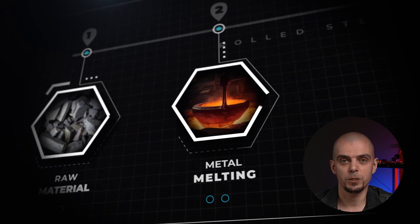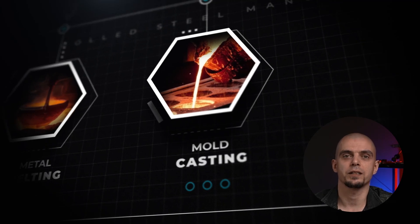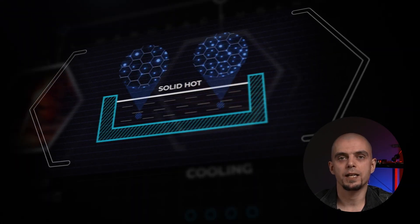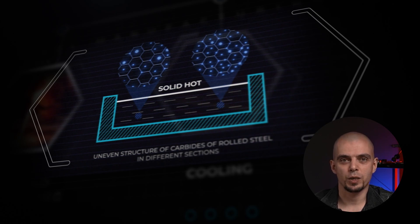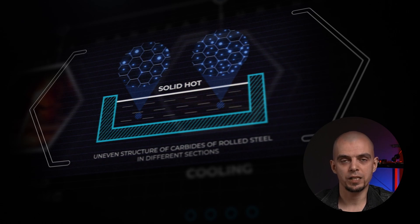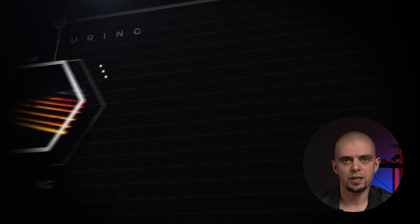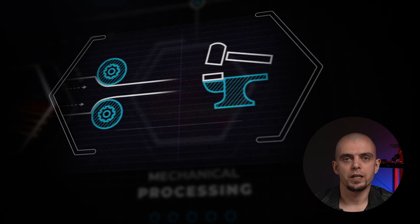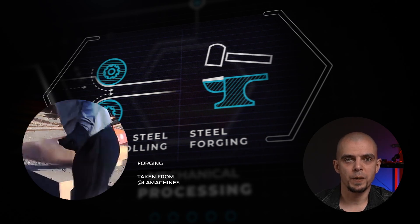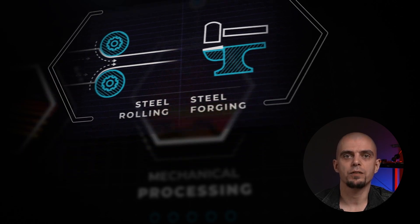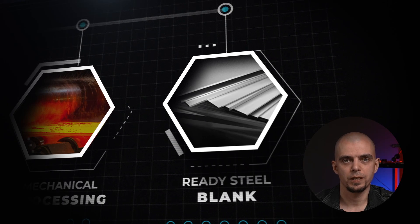In traditional steel manufacturing, the molten metal is poured into molds, then slowly cools while carbides form an inhomogeneous crystalline structure in which they are distributed unevenly. This makes a problem when it comes to cutting of this workpiece, because different parts of it might have different characteristics — the alloying elements along with carbides are distributed erratically. The larger the casting, the more heterogeneous its composition. The processes that follow — either hot rolling or forging — compact the structure of the steel but cannot affect its composition or the uniformity of that structure.